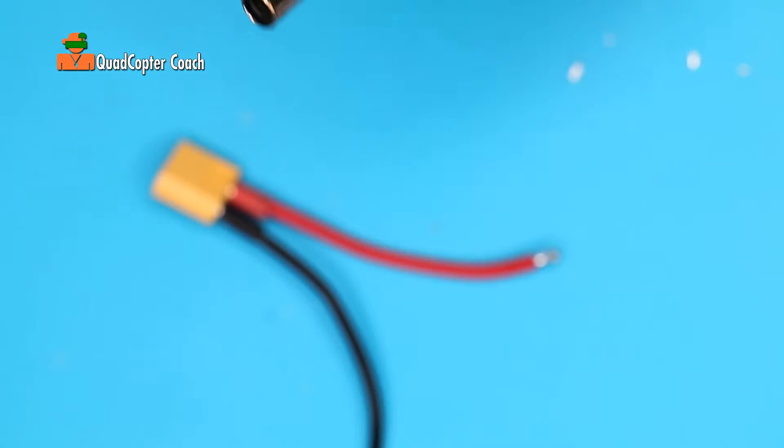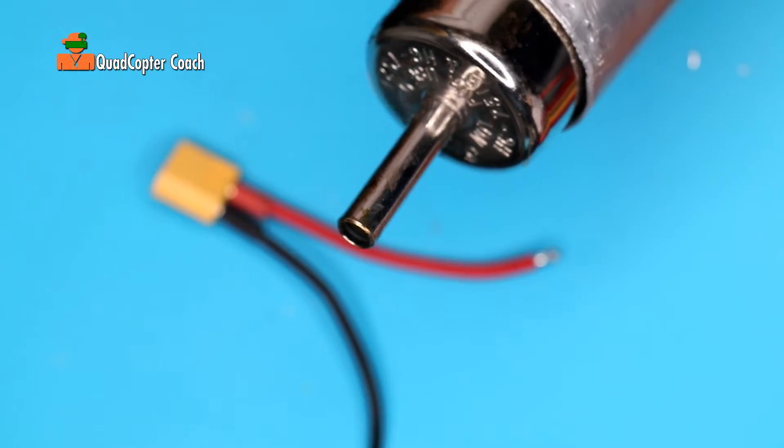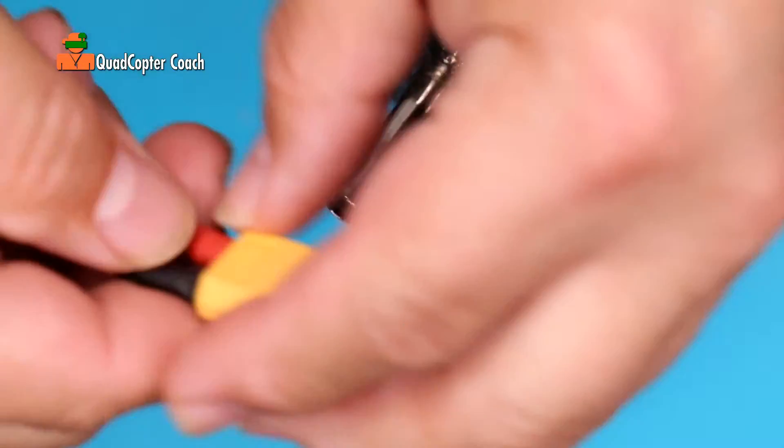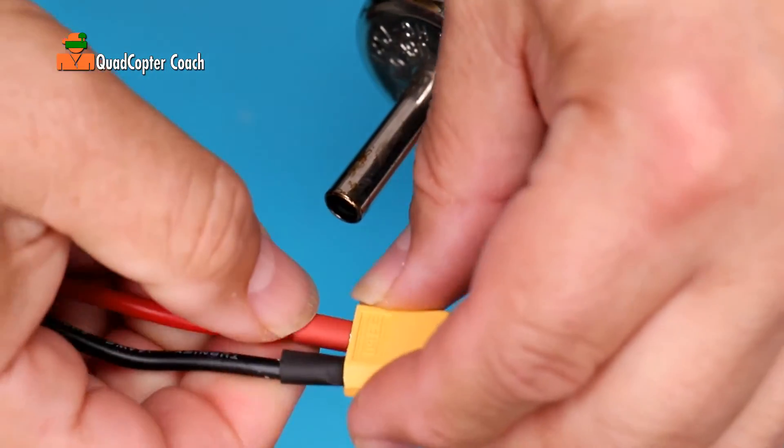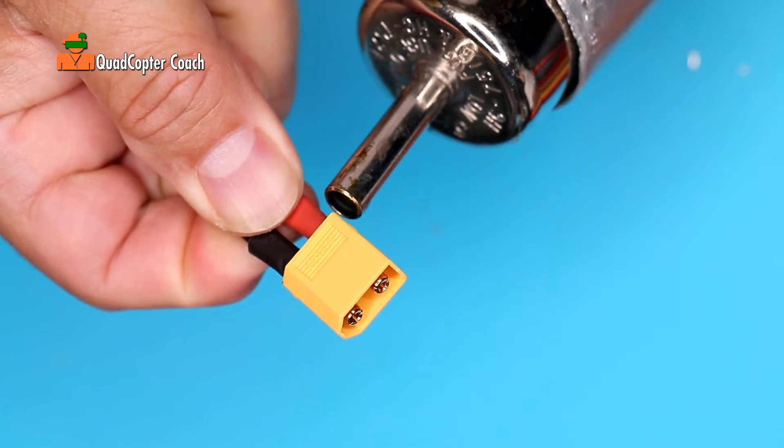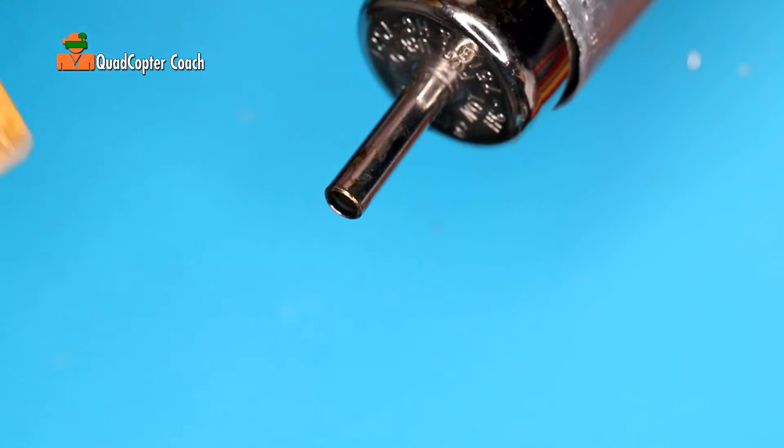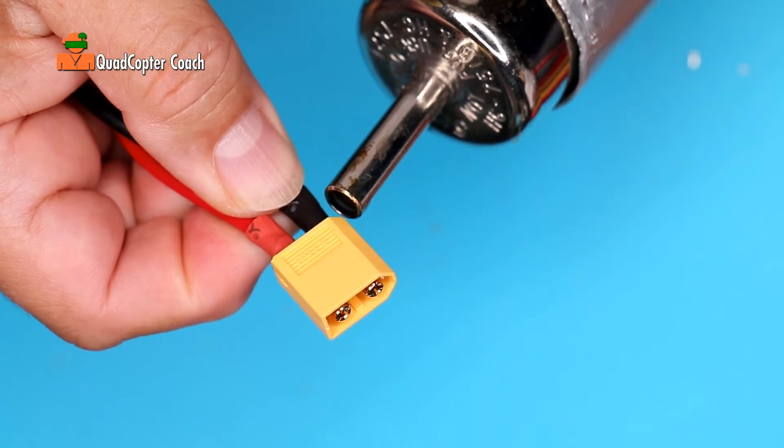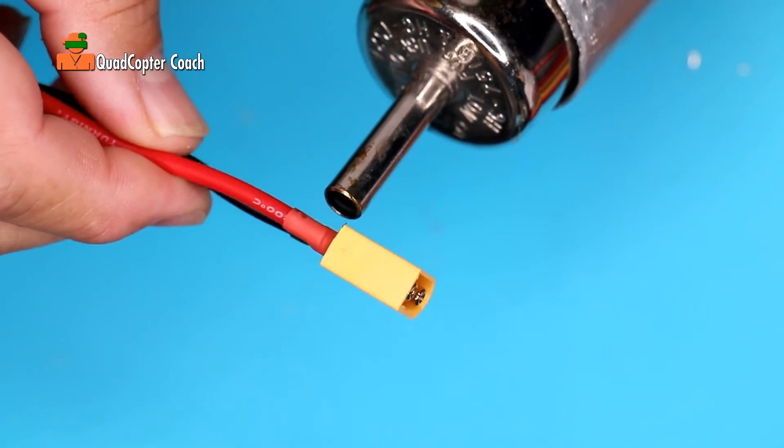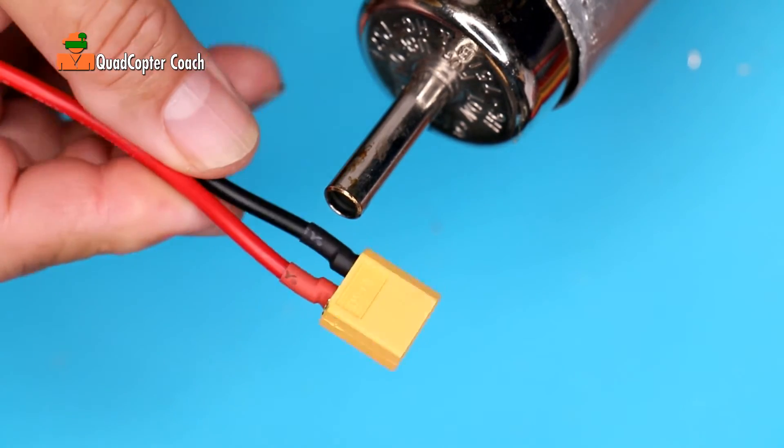Now that we have that all set, we need to get our heat gun. This is mine. You can use a cigarette lighter. I prefer the heat gun. Take your shrink tube and make sure, I like to use my fingers to just push that down just a little bit just to get started and give it a little heat. Careful not to burn yourself. Get that started. You want to make sure that that's flush all the way down. And then just apply the heat and it's flush. And there we go.